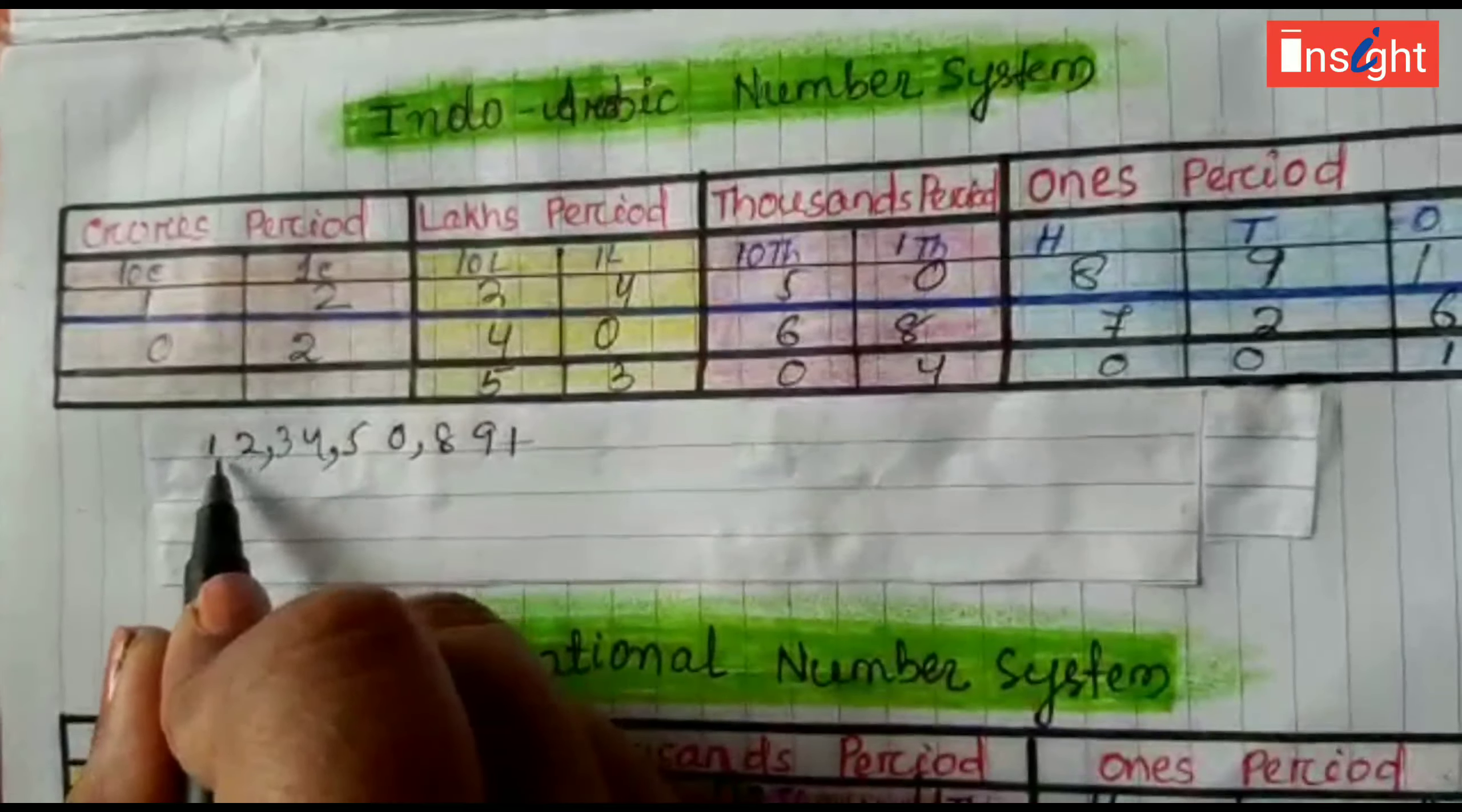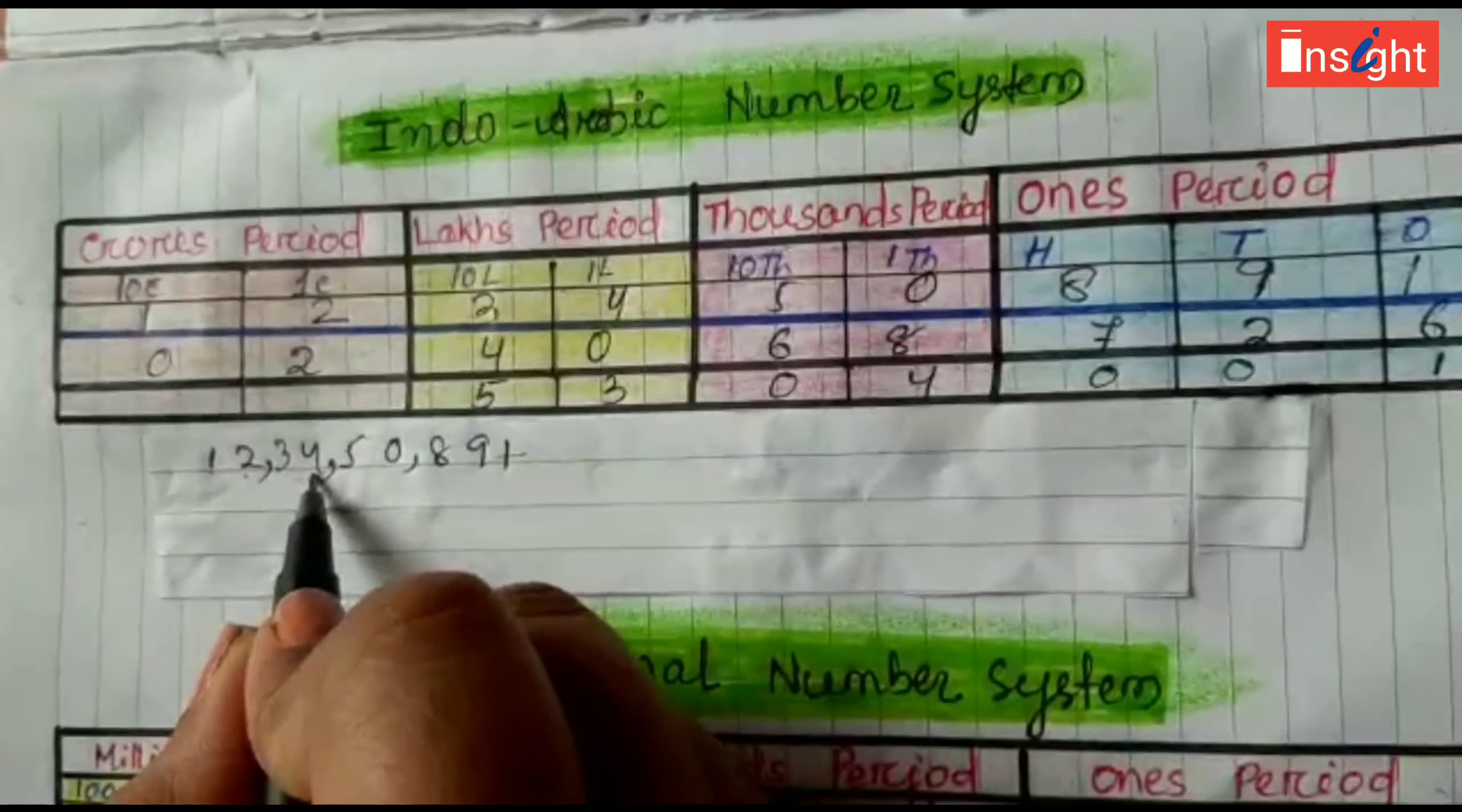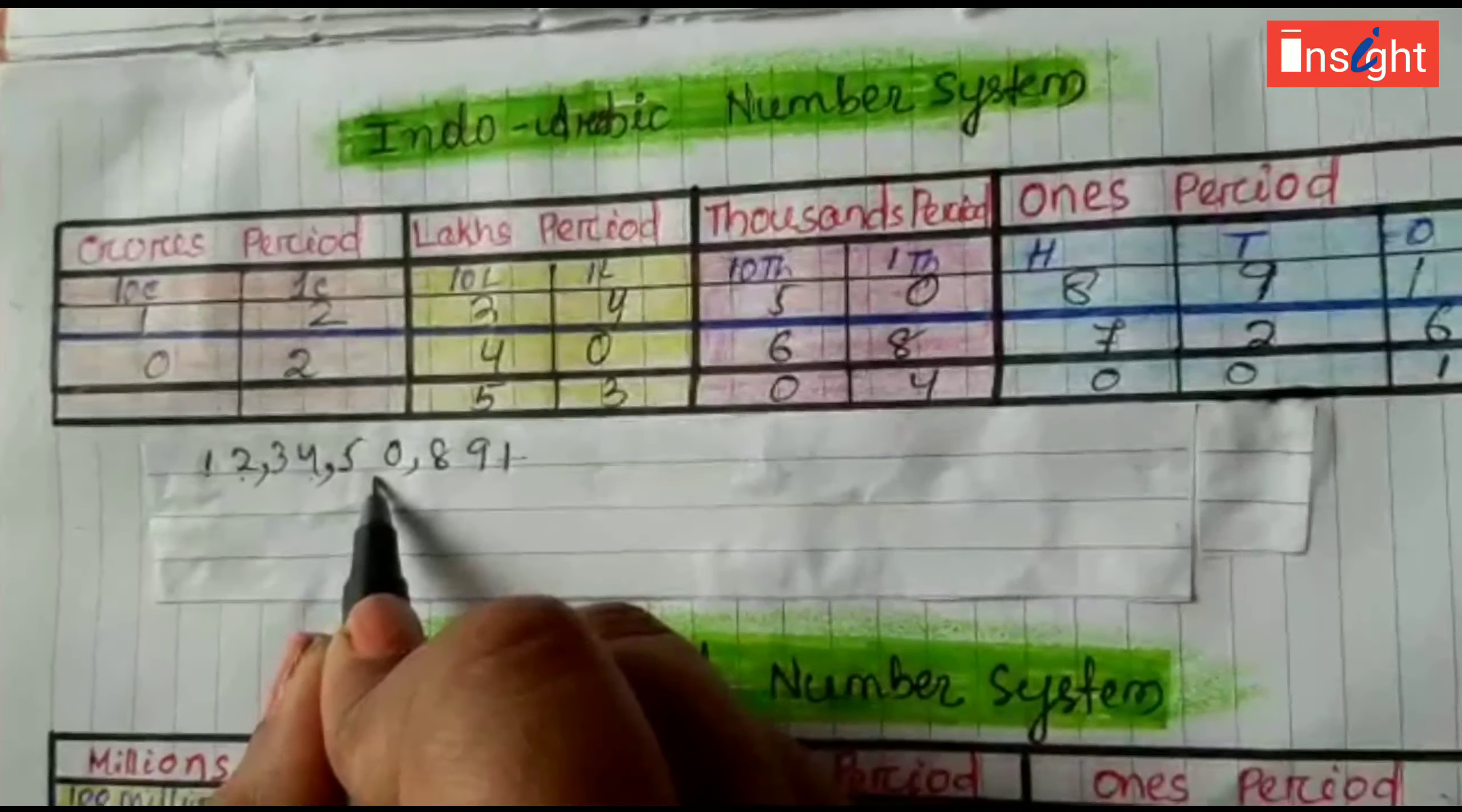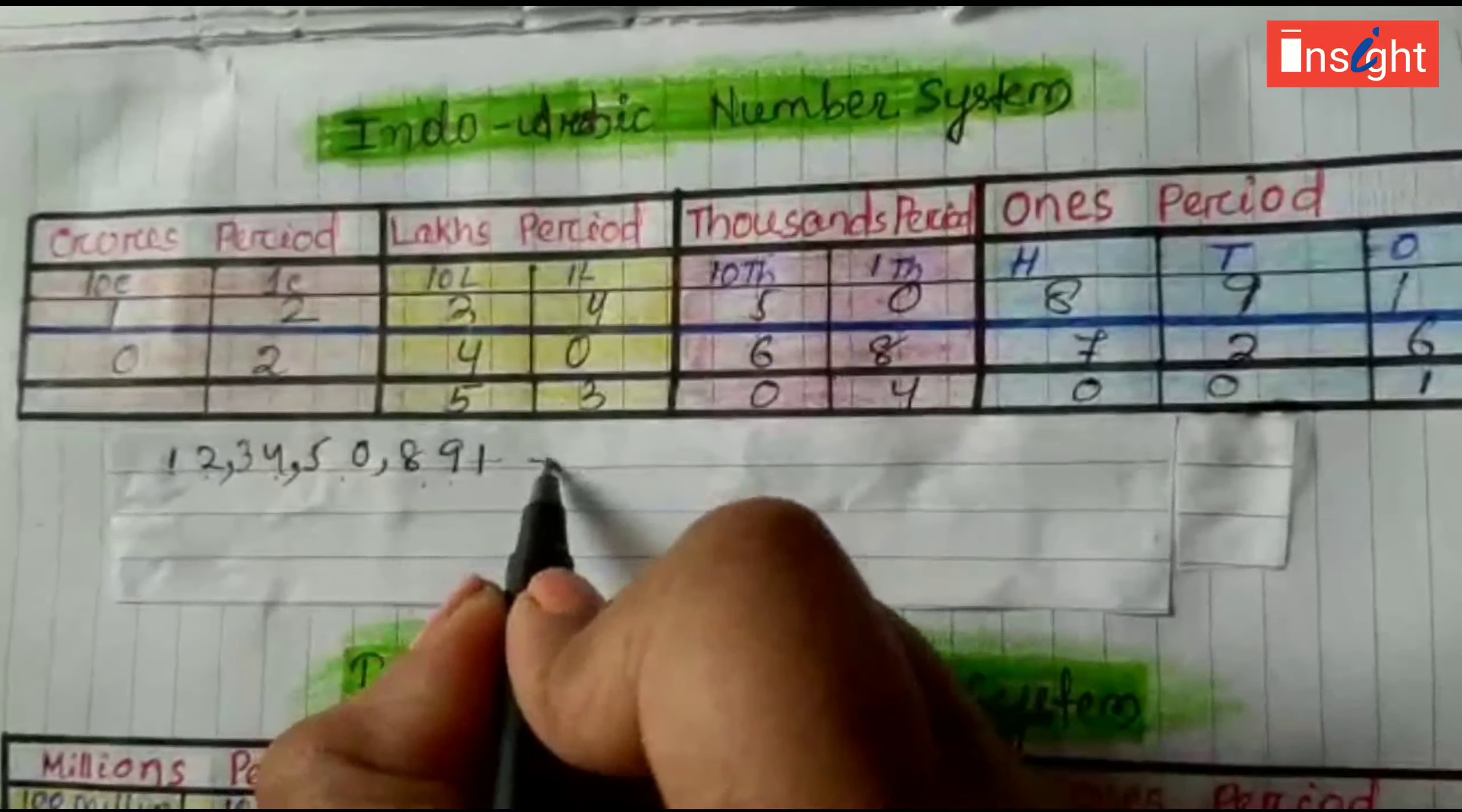Now, these are in crores period, so twelve. These are in lakhs period, thirty-four lakhs. These are in thousand period, so fifty thousand.